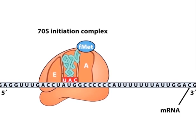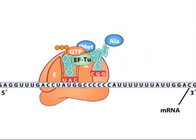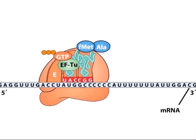The first step in elongation is the binding of the next aminoacyl tRNA to the A site by pairing with the second codon of the mRNA. The tRNA is escorted by an elongation factor called EF-Tu, which is complexed to GTP.